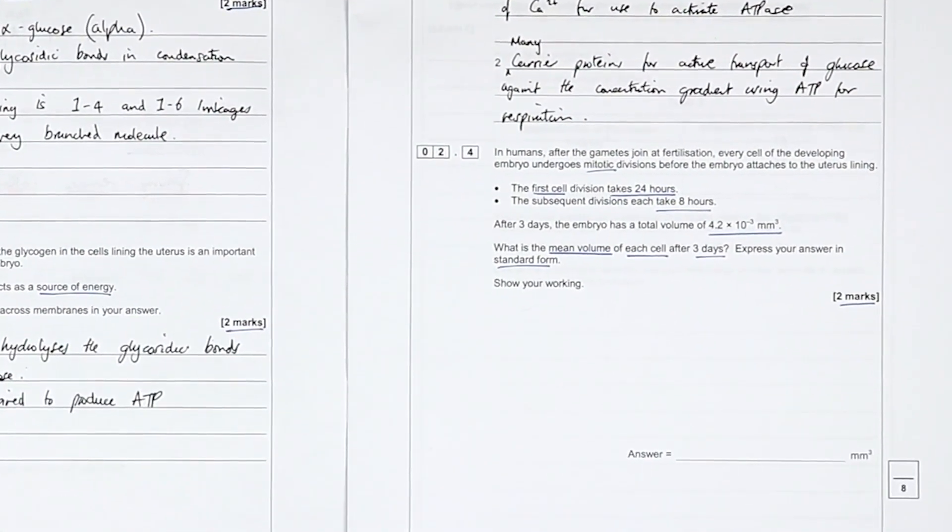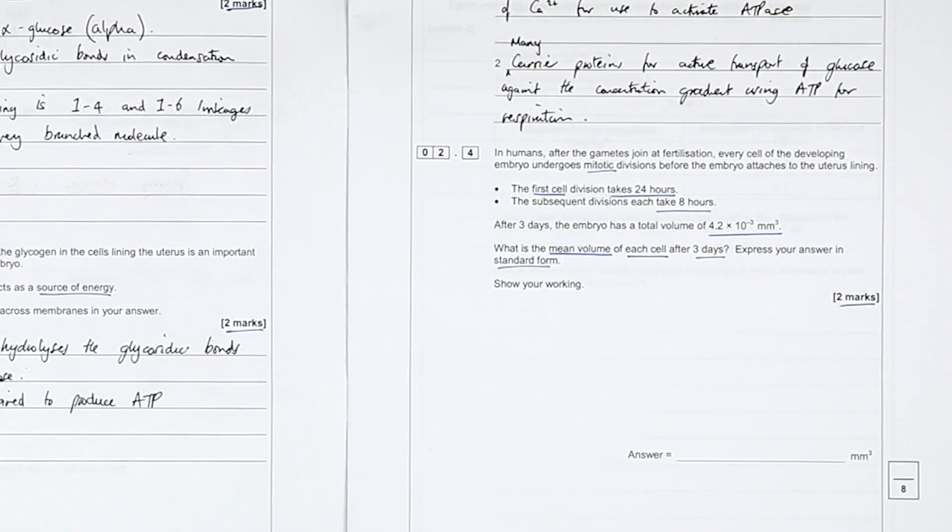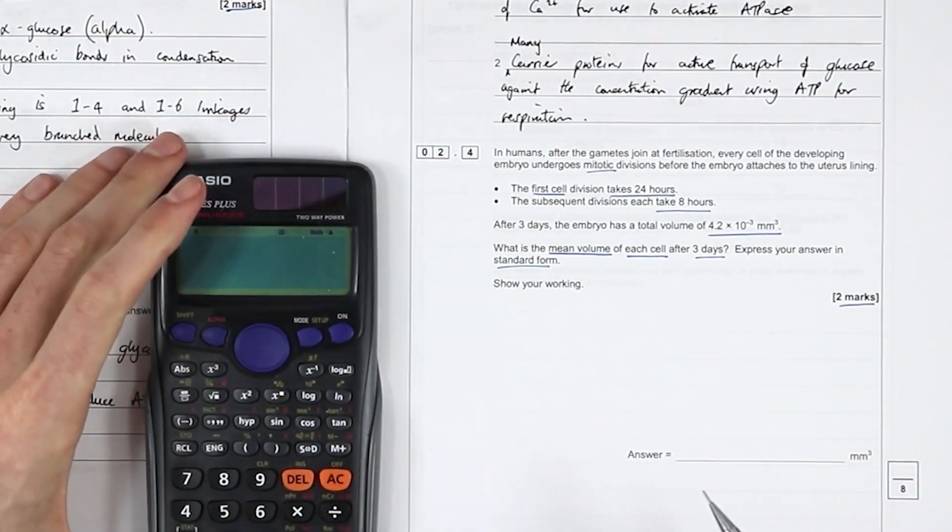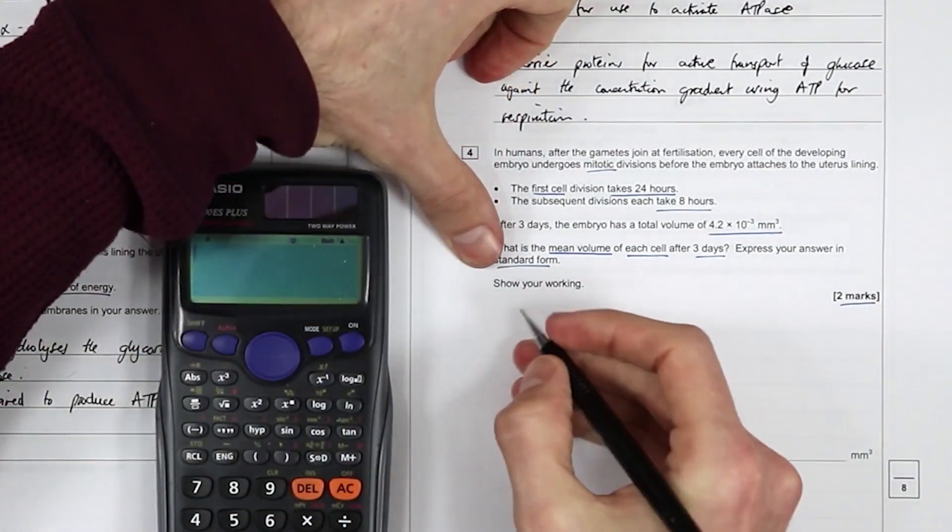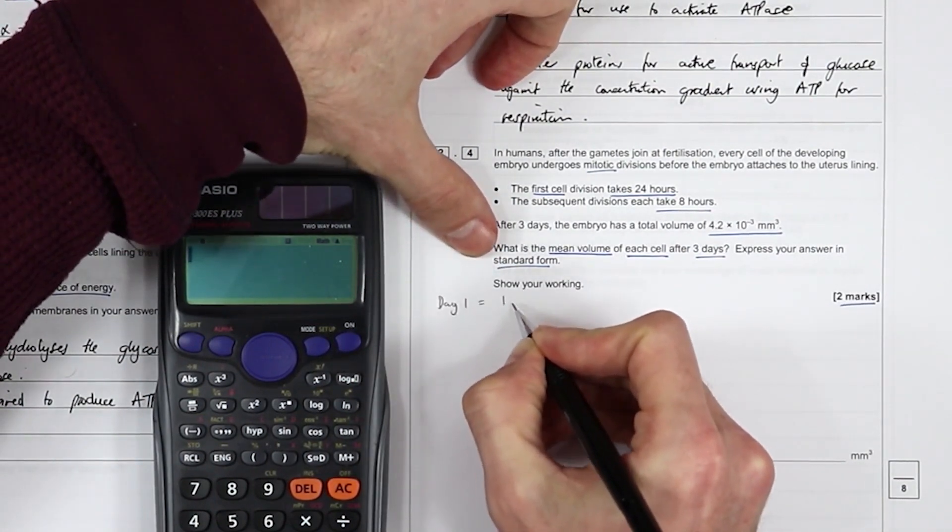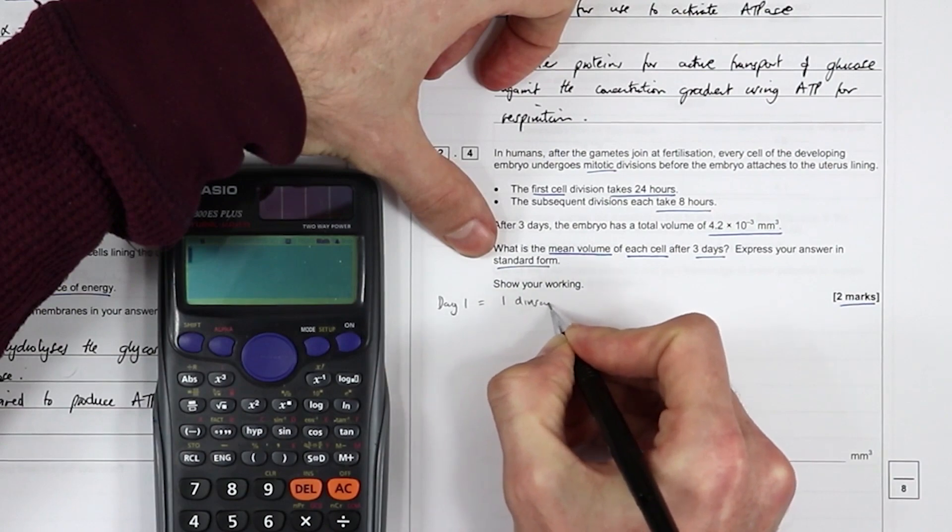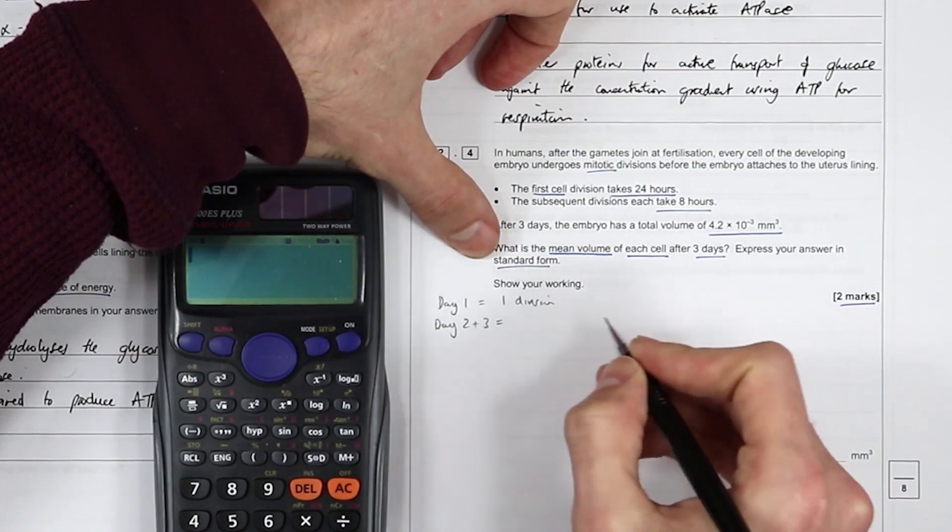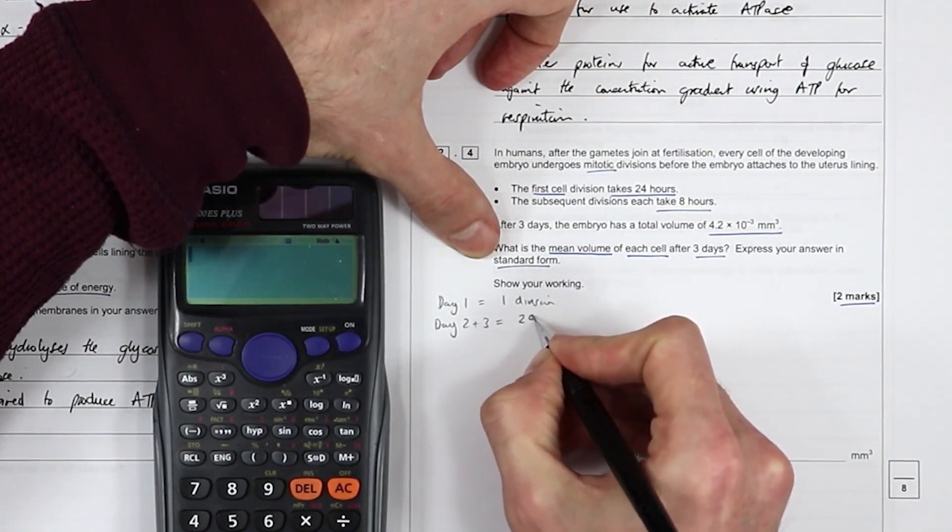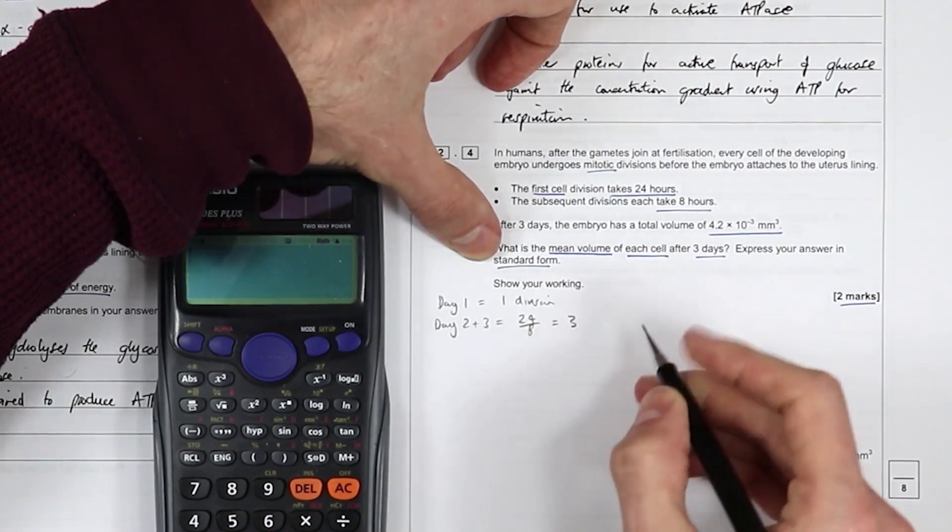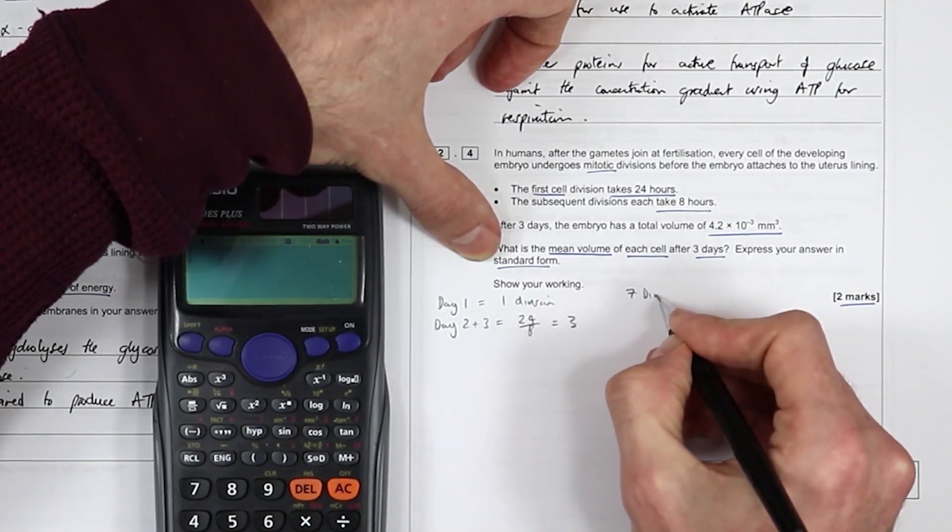Okay part four I'm going to do in pencil because again you don't have mega working space so I find it easier to do these in pencil in case I make a mistake and I need the space back again. Okay so day one is one division. Day two and three equals 24 divided by eight equals three and they've got obviously that's the same for day two and three so there's seven divisions.